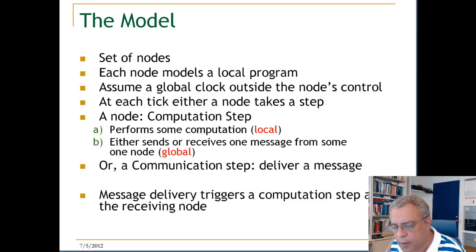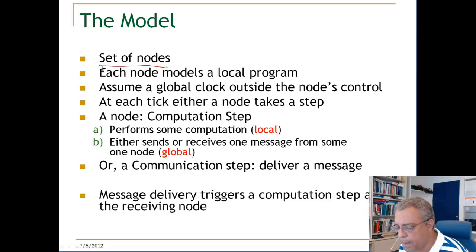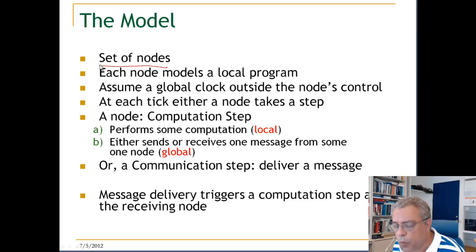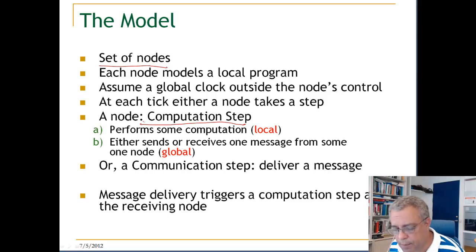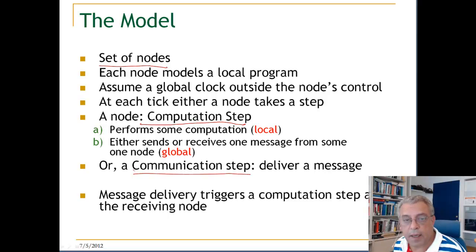So what is our model? We have a set of nodes in our system. Each node models a local program. We assume a form of global clock — it is outside the node's control, for us to understand what is going on from a global point of view. At each tick, a node will either take a step: either a computation step, or a communication step. A computation step performs local computations and sends or receives one message from one other node. A communication step is just a delivery of a message to another node.